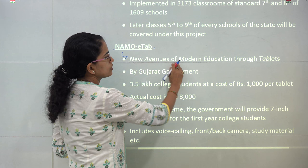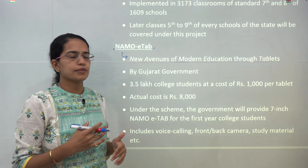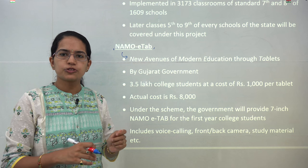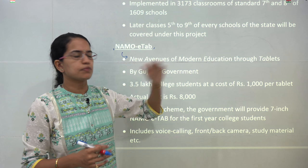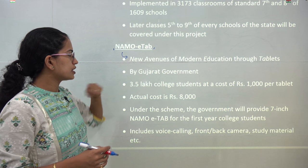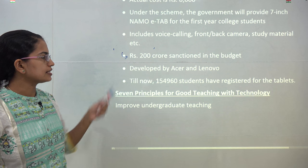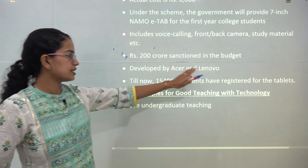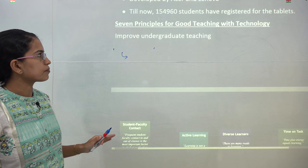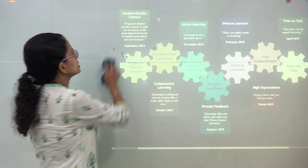NAMO ETA stands for New Avenues of Modern Education Through Tablets, another initiative by the Gujarat government. The idea is to provide college students with tablets. The original cost of the tablet is around 8,000 rupees, but they are provided at a subsidized rate of 1,000 rupees. The aim is to deliver voice calling, study material, and everything through tablets, which are being developed by Acer and Lenovo. Nearly 1.5 lakh students have registered so far.